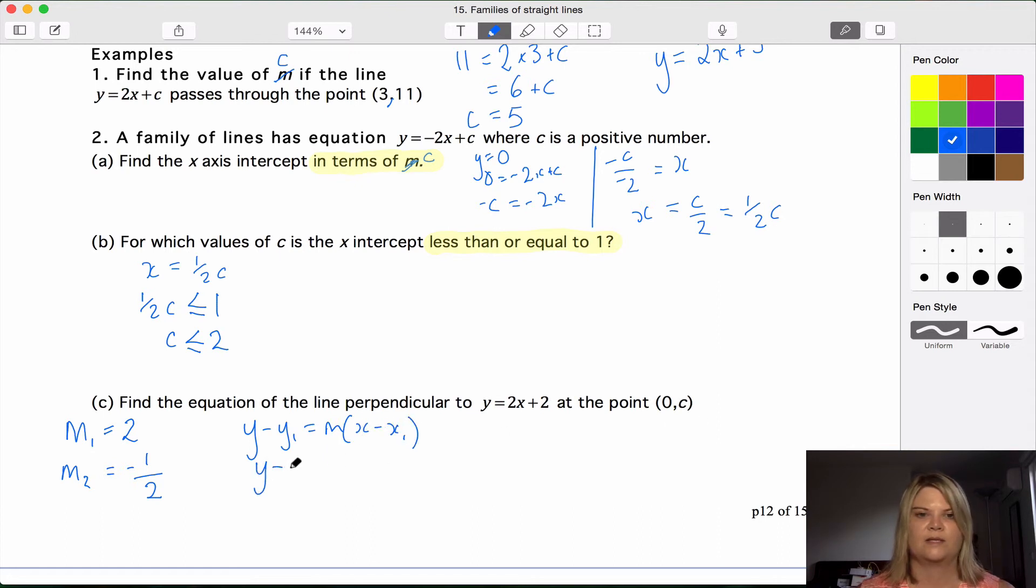So we've now got a gradient and one point because this just counts as a point. So we can go y minus y1 equals m times x minus x1. y1 is c. m is negative 1 half, x minus 0, negative 1 half x minus 0, y equals negative 1 half x plus c. Find the equation. This is an equation of a line and it's perpendicular to this line at this point. Done. There's our final answer.